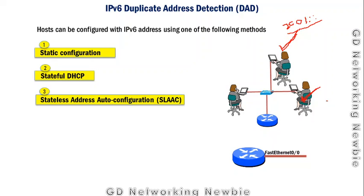Sometimes this can also happen deliberately — for example, if someone knows that a friend is using a particular IPv6 address and deliberately assigns the same address to see what happens. In any case, if there is address duplication on the network, we need some mechanism to detect and resolve it. That is where Duplicate Address Detection comes in.